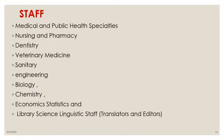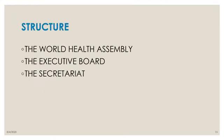The WHO staff includes specialists in medical and public health, nursing, pharmacy, dentistry, veterinary, sanitary engineering, biology, and chemistry — covering almost all areas related to health, public health, and animal health. There are 4,500 staff members: 30% in regional offices, 30% at headquarters in Geneva, and 40% working in individual countries. The structure of WHO consists of the World Health Assembly, the Executive Board, and the Secretariat.